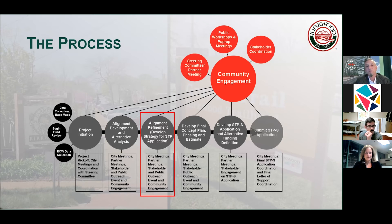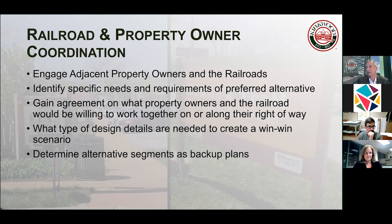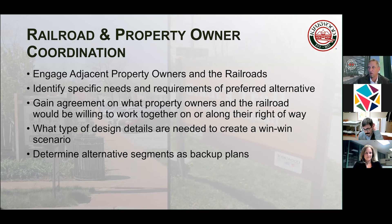That brings me to railroad and property owner coordination. We have to engage adjacent property owners and both railroads — Burlington Northern as well as Union Pacific. We have to identify specific needs and requirements for the preferred alternative, gain agreement on what property owners and the railroad would be willing to do to work together along their right-of-way, and determine what design details we need to create a win-win. We also have to determine alternative alignments as backup plans in case we run into a roadblock in one segment of an alternative.